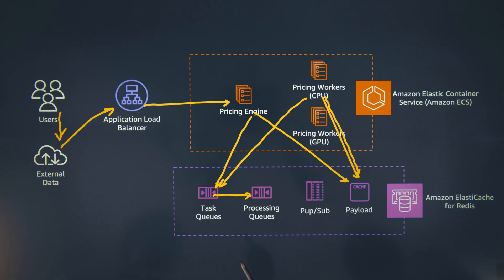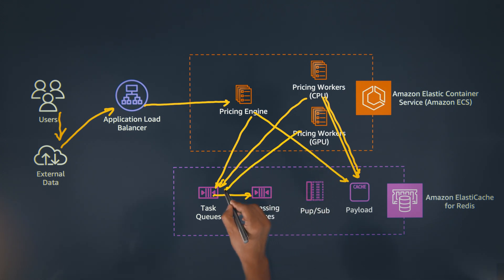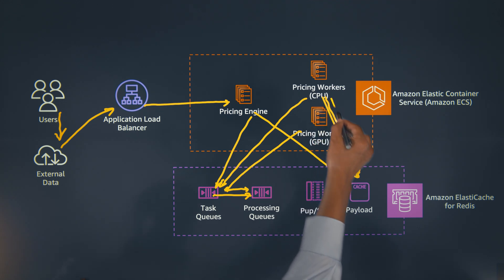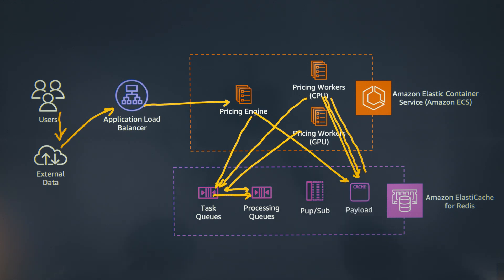I can see you have two different types of pricing workers — why is that? Some of the jobs have high computation power intensity, so we are actually leveraging GPU instances to do acceleration in cases where CPU is not able to process in time. Similarly, the GPU worker will monitor the task queue for a dedicated GPU task queue, pop one into the GPU processing queue, retrieve the payload from Redis, do the computation, and save the result back into Redis.